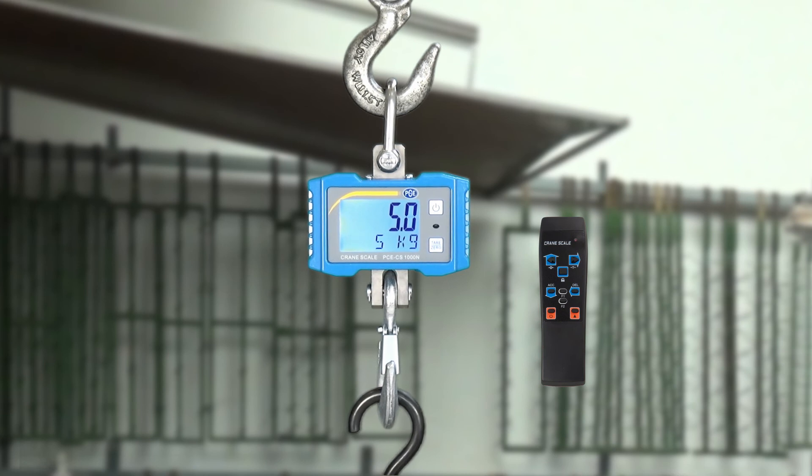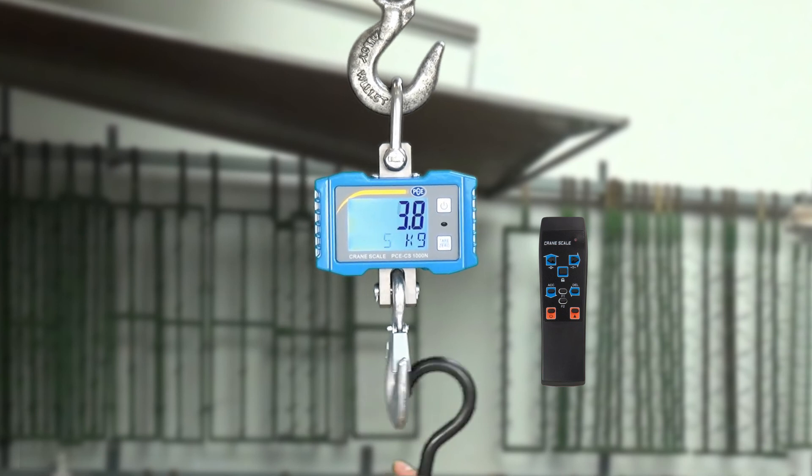An interesting function of the crane scale is also the sum function. Means that I can add together several weighings in succession. We have 5 kilogram. I press the ACC key on the remote. This is shown short in the display so that I know that this value is taken over in the internal memory.